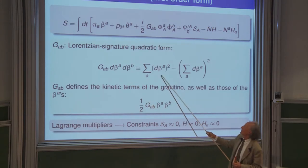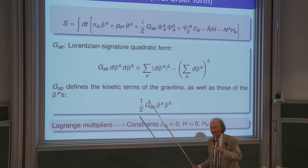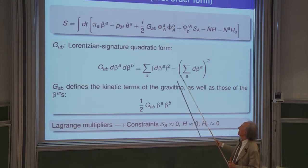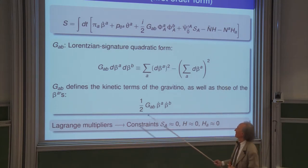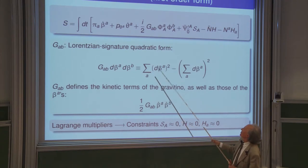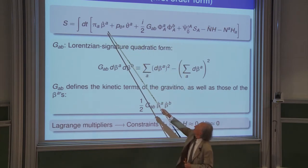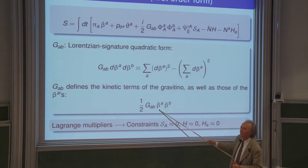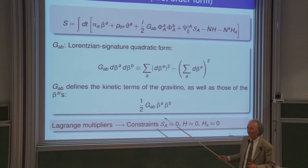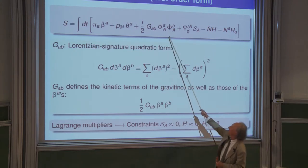This quadratic form, defined in any dimension as the sum of the squares of n objects minus the square of their sum, is a hyperbolic metric. It is the metric in Cartan space of the hyperbolic Kac-Moody algebra AE3. This same quadratic form G_AB appears both in the kinetic terms of the Gravitino and in the kinetic term of the geometry — the derivative of the logarithm of the shape — linked to each other by supersymmetry.